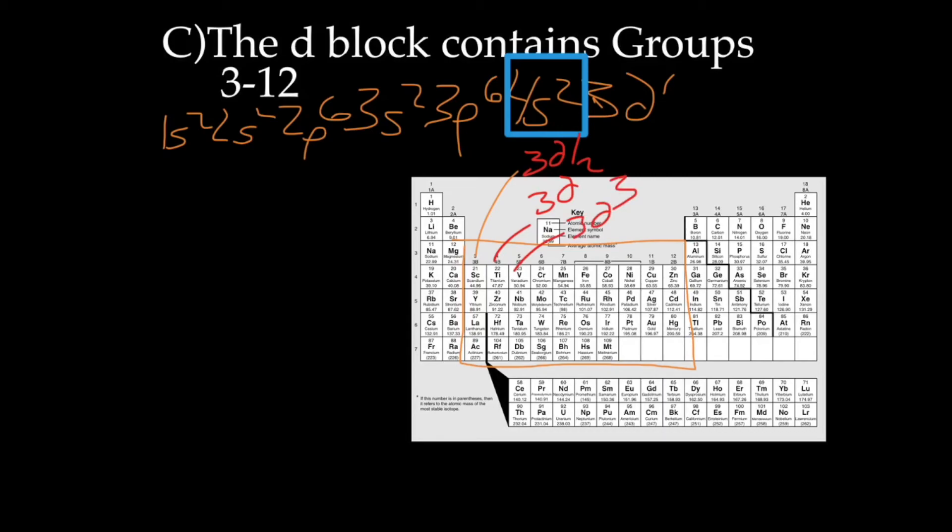However, when we're talking about valence, all of these guys, valence electrons are going to be s2. These will be 4s2, 5s2, 6s2, 7s2.